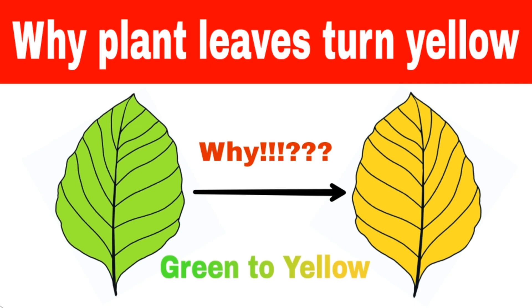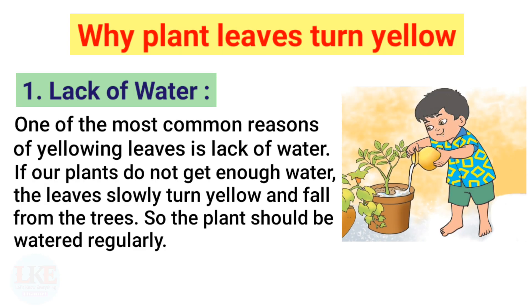We should know why plant leaves become yellow so that we can recover them. Without trees, there can be no oxygen storage on earth, and without oxygen we cannot survive. Therefore it's our primary duty to save trees. Now let's analyze each point — why do leaves turn from green to yellow.